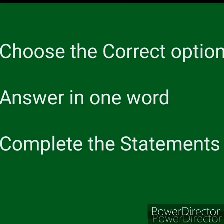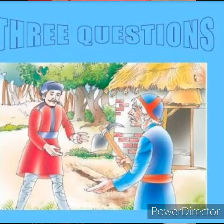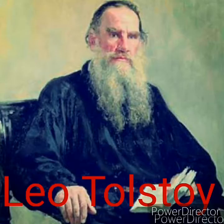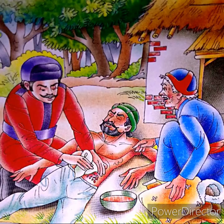Then, complete the statement: a statement will be given and you have to fill in the blank with the appropriate word. Let us start Chapter 1, '3 Questions'. In this chapter we will discuss the title of the story, which is '3 Questions' — questions to which the king wanted to know the answers. The writer of the story is Leo Tolstoy. The main characters are: first, the king; second, the hermit; and third, the wounded man.